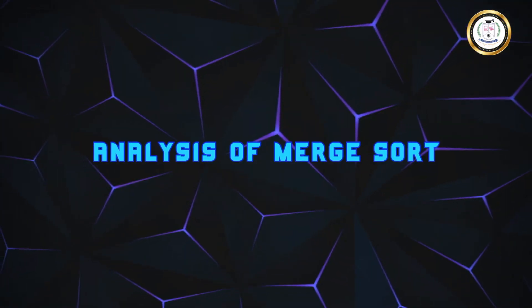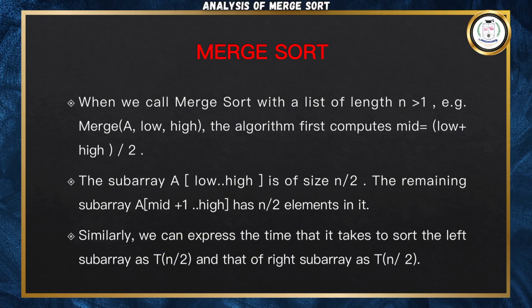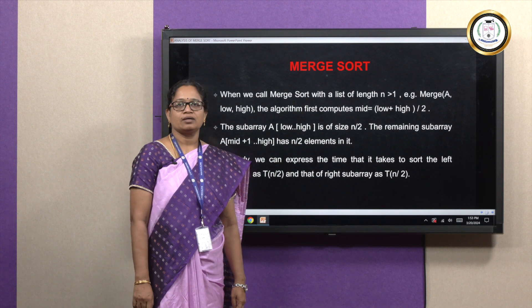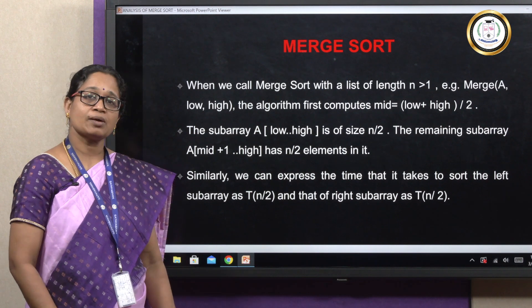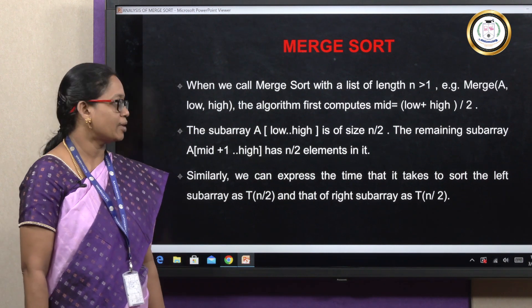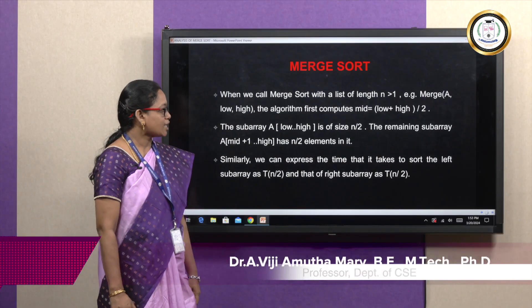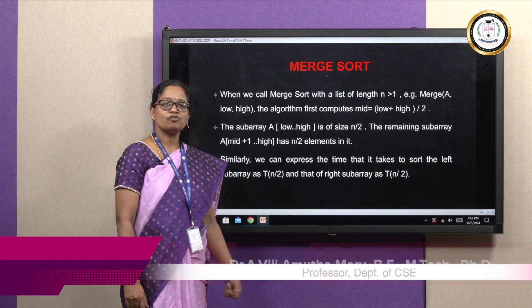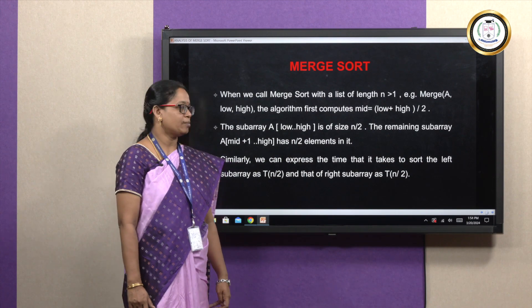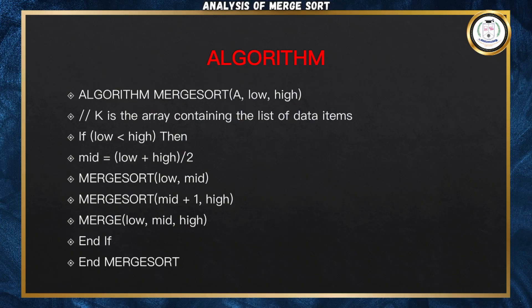When you call a merge sort with a list of length n greater than 1, the algorithm first proceeds by computing the middle value. The middle value is computed by the expression low plus high divided by 2. Here we have two subarrays which are of size n/2. We can express the time taken to sort the left subarray as T(n/2) and that of the right subarray as T(n/2). Here is the algorithm for merge sort.